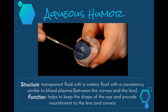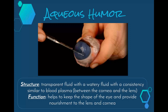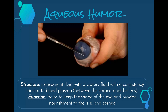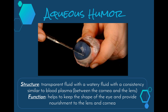The aqueous humour is the first fluid found in our eyeball. It's a transparent fluid with a consistency similar to blood plasma — not too thick but not too thin either — and it is found between the cornea and the lens. Its function is to help keep the shape of the eye and provide nourishment to the lens and cornea, neither of which have their own blood supply.